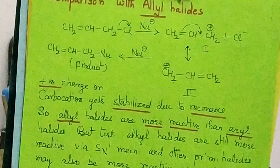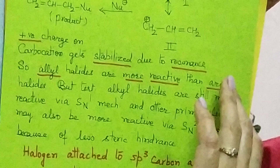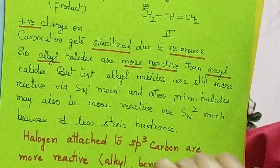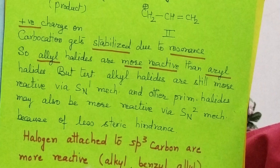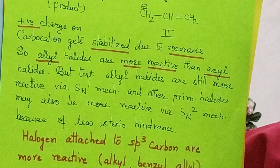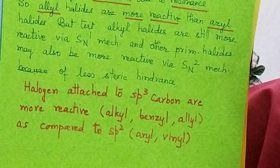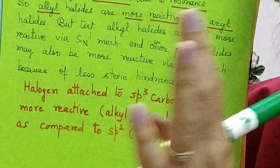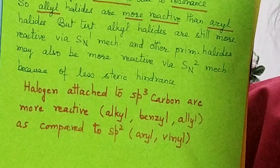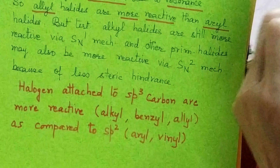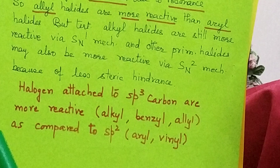Comparing allyl halides with alkyl halides, the behavior depends on a case-by-case basis, considering SN1 and SN2 mechanisms. SN1 is a two-step mechanism involving carbocation formation. A tertiary alkyl halide forms a tertiary carbocation, which can be stabler than even an allyl carbocation due to hyperconjugation, making it more reactive via SN1. So tertiary alkyl halides can still be more reactive than allyl halides via SN1.